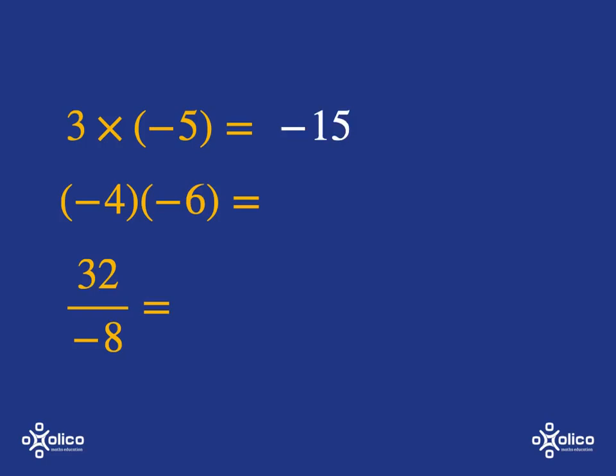The next one, remember when we just write two brackets next to each other, we mean multiplication. So it's negative 4 multiplied by negative 6. A negative multiplied by a negative has to be positive. And 4 multiplied by 6 is 24.